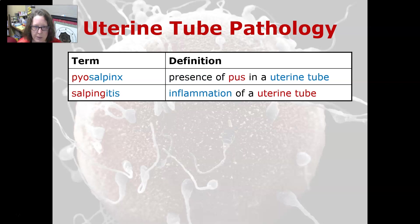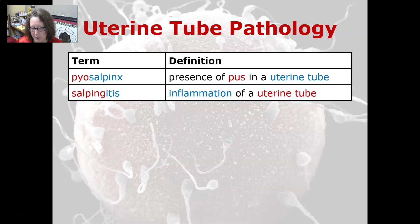A little bit about uterine tube pathology. Pyosalpinx is the presence of pus in a uterine tube, and salpingitis is an inflammation of a uterine tube.